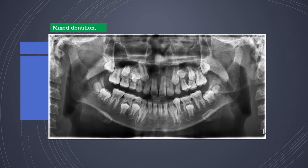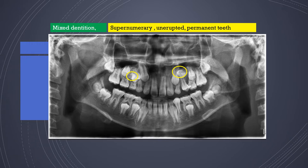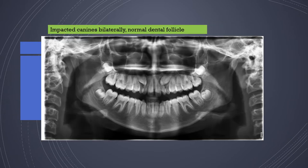In mixed dentition cases, panoramic radiography is of great value in understanding the location of unerupted successor teeth. It also helps identify supernumerary unerupted or unerupted permanent teeth and analyze their location. However, you should be cautious while exposing children to panoramic radiographs.